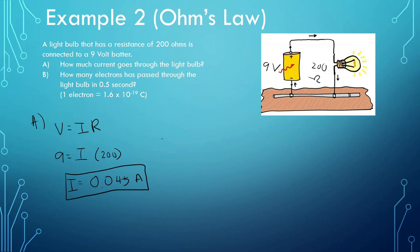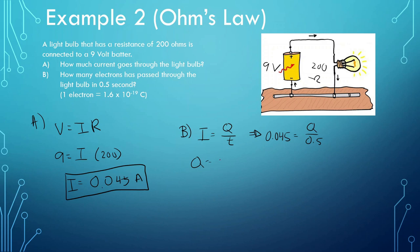How many electrons have passed through the light bulb in 0.5 seconds? This is very similar to the last question. We know that current is how much charge is moving through a given period of time. We know the current is 0.045. We don't know how much charge there is, but we do know that we want to find how much charge there is in 0.5 seconds. Multiplying gives us a charge of 0.0225 Coulombs.